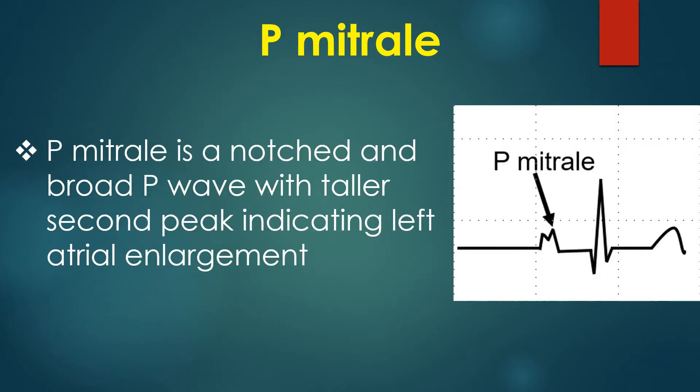P mitral is a notched and broad P wave with a taller second peak, indicating left atrial enlargement. The initial part of the P wave is contributed by the right atrium, which is activated first, and the second part by the left atrium, activated later. Left atrial overload is associated with a prominent negative deflection of the P wave in V1, representing the left atrial component.